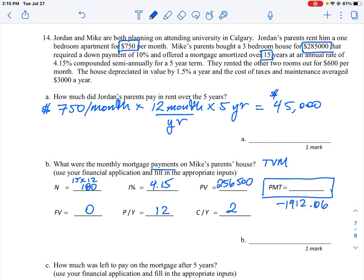You plug that into your calculator and then you will get a negative value here of negative 1912.06. The negative means that it's a payment, its cash flow is leaving you. So that is the amount that you would pay out every month or that the bank will collect from you. It's 1912.06.